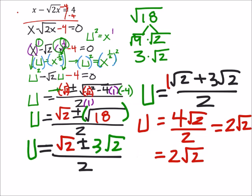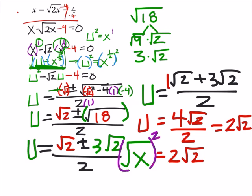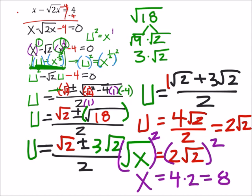We can simplify the 4 and 2, giving us 2 times the square root of 2. So just from the addition part, u is 2 times the square root of 2. But what is u? If we look back, it's x to the 1/2. So I'm going to replace that with square root of x, since that's how we've seen it more often. To get rid of a square root we square it, and squaring both sides leaves us with x equals 2 squared — which is 4 — times the square root of 2 squared — which is 2. So 4 times 2 is 8, and that would be one of our answers.